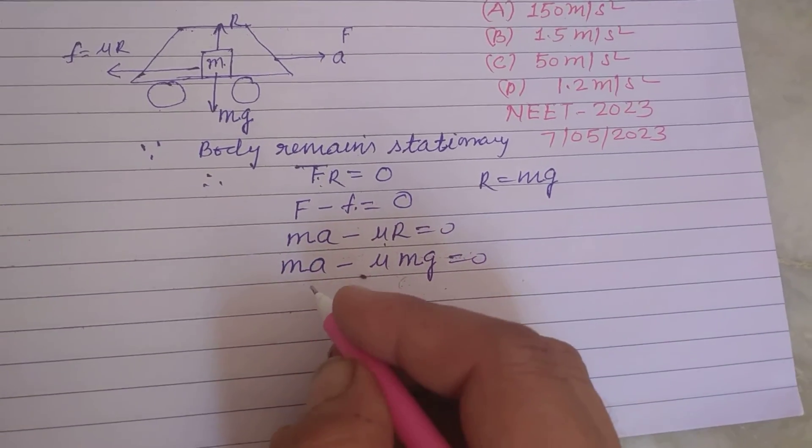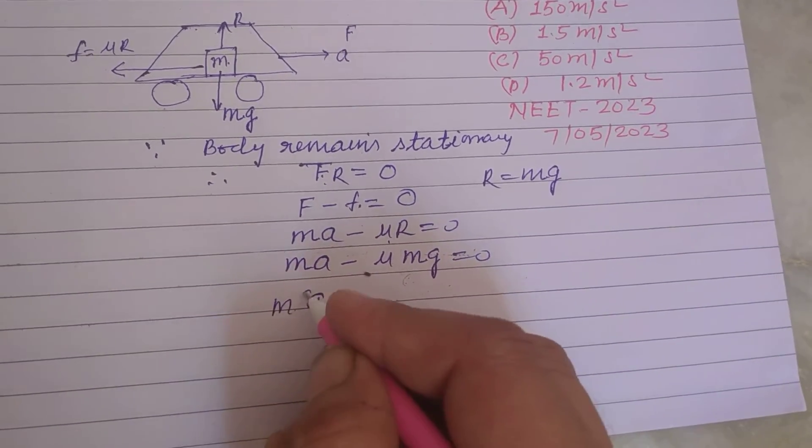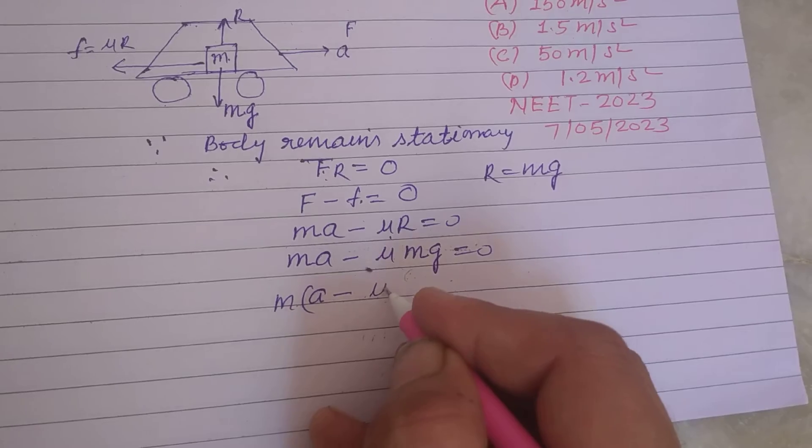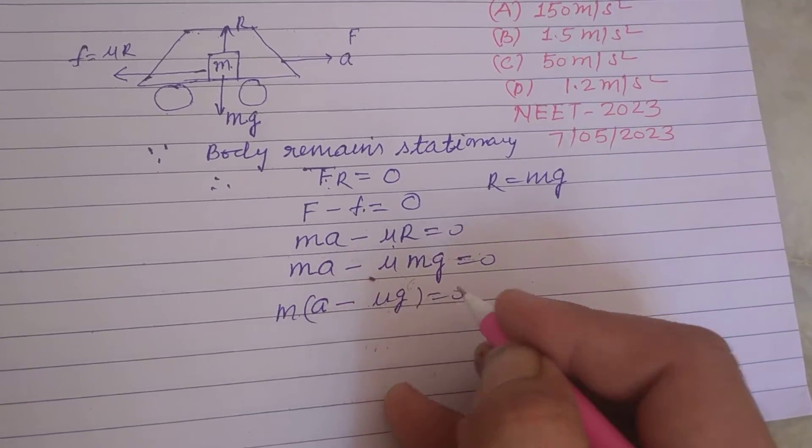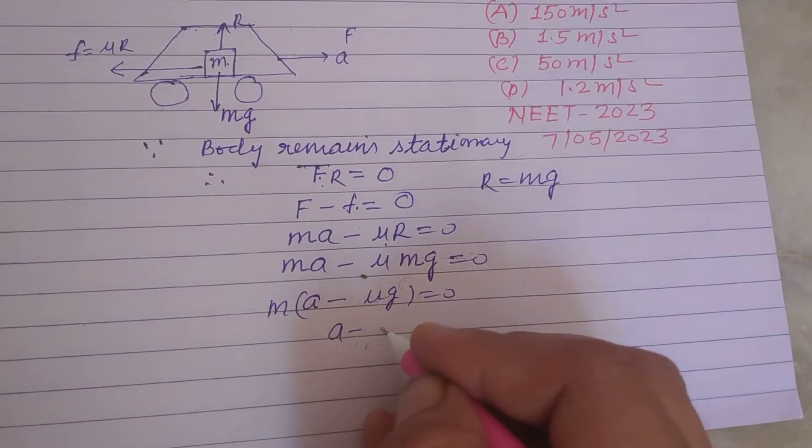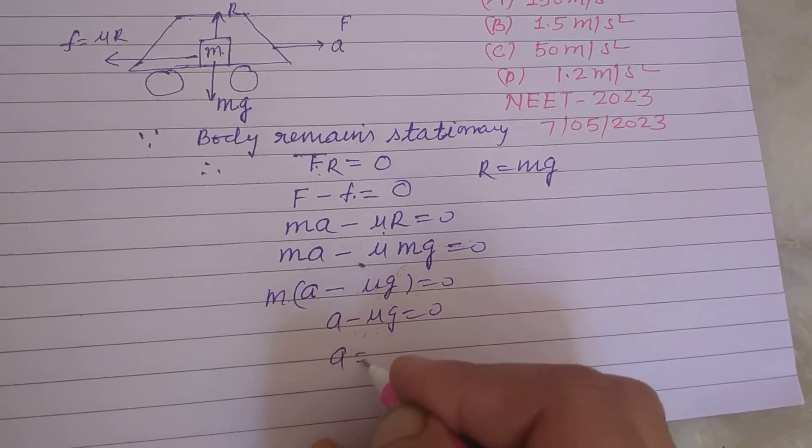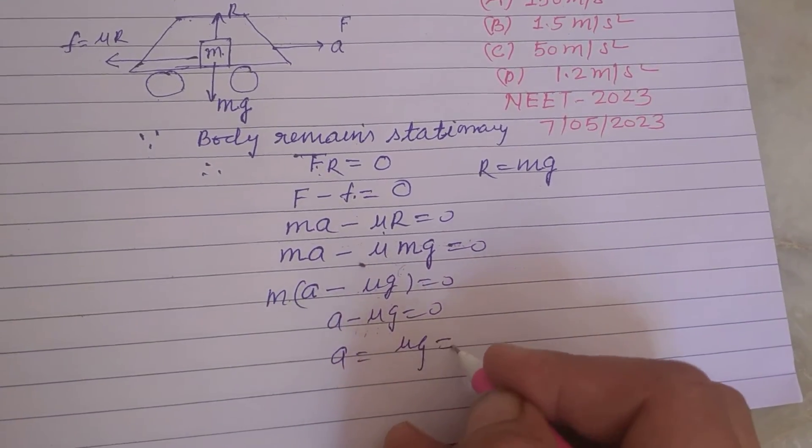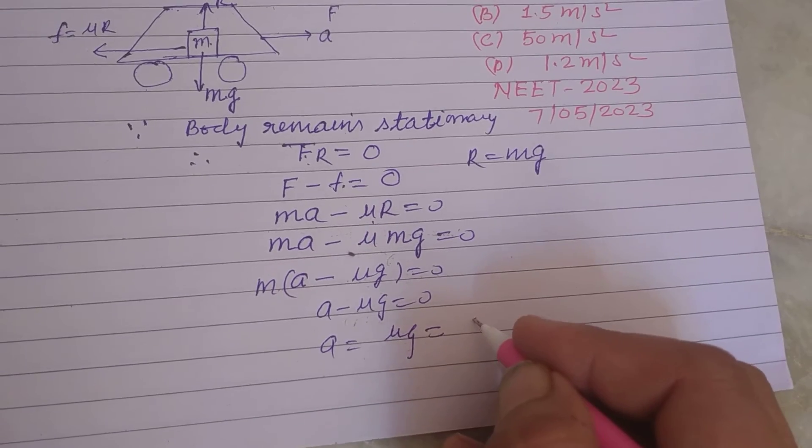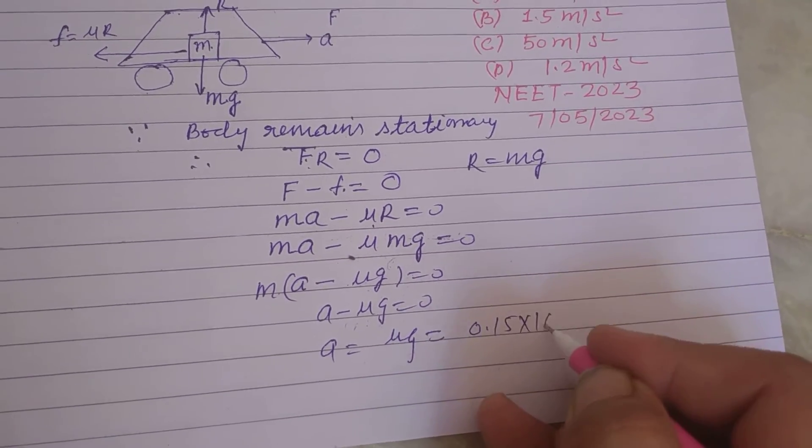Now we take m as common, a minus μg equal to 0. Therefore, a equal to μg. And μ is 0.15 and g is 10.